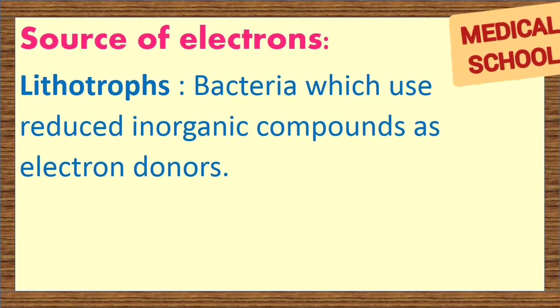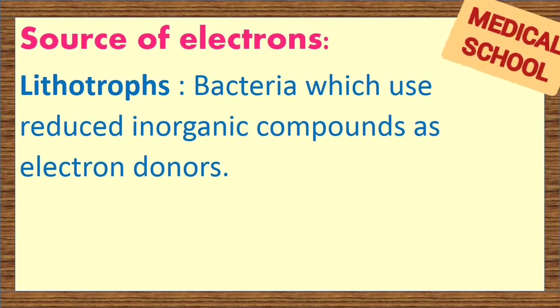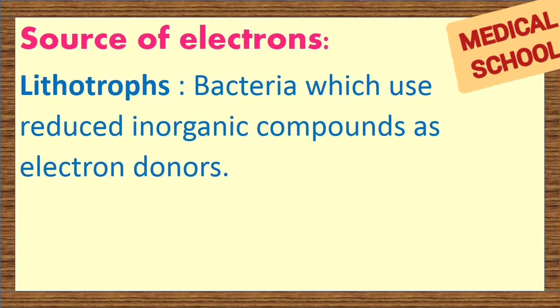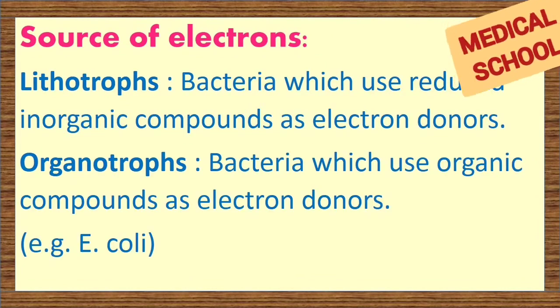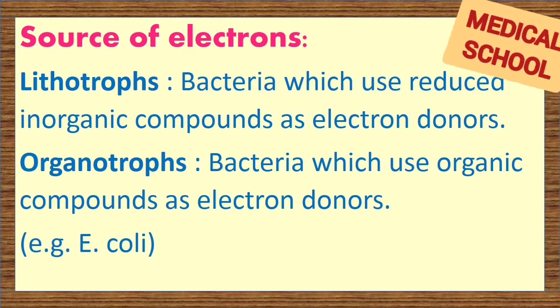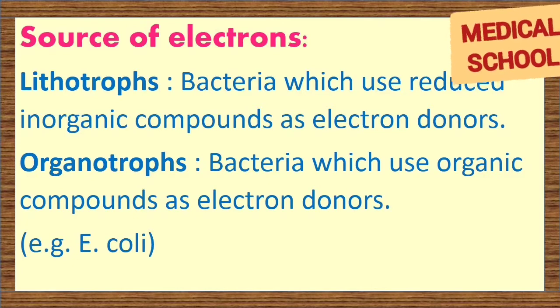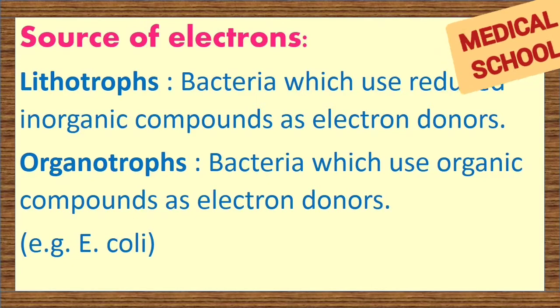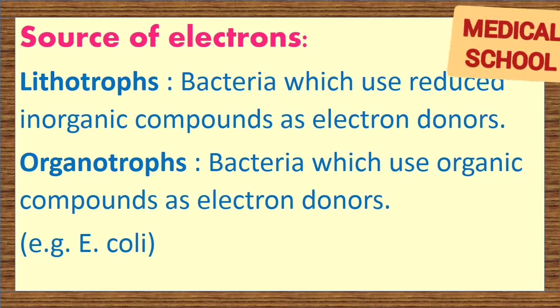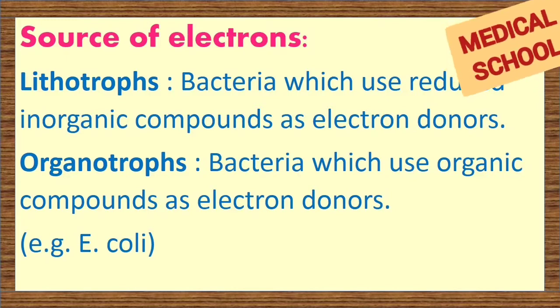Source of electrons: Lithotrophs are bacteria which use reduced inorganic compounds as electron donors. Organotrophs are bacteria which use organic compounds as electron donors. Try to remember it this way — 'organo' for organic.